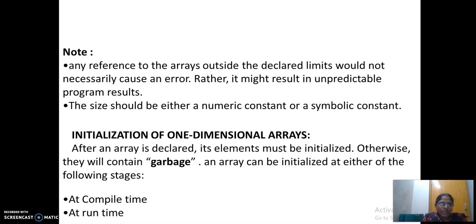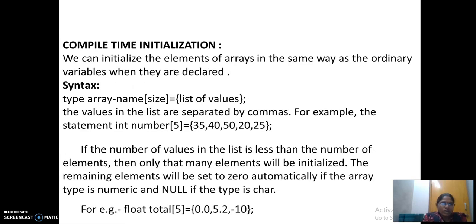Generally, you are going to have two ways of initializing your one-dimensional array. One at the compile time, the other at your run time. Compile time initialization. We initialize the elements in the same way as ordinary variables. Like, your data type, array name, size is equal to list of values. If number of 5 is equal to 5 numbers, it is going to allocate. If it is floating point value, it is floating. If, suppose, the size is 5 and you are assigning only 3 values, what about the remaining 2? The remaining 2 is automatically set to the value of 0.